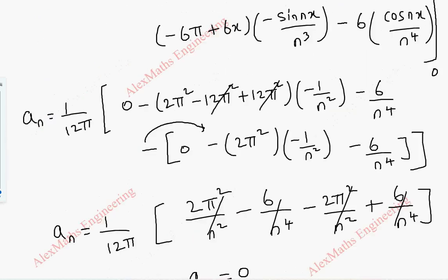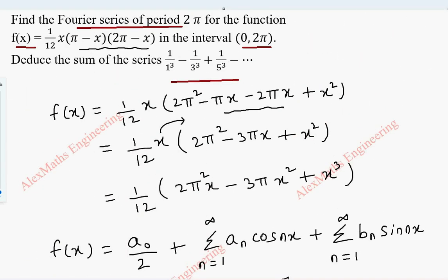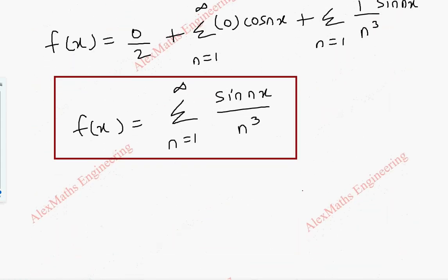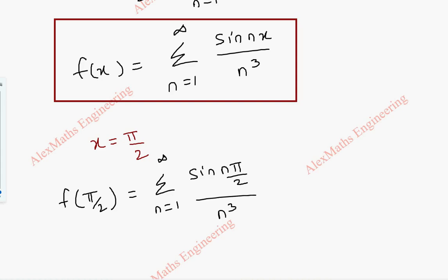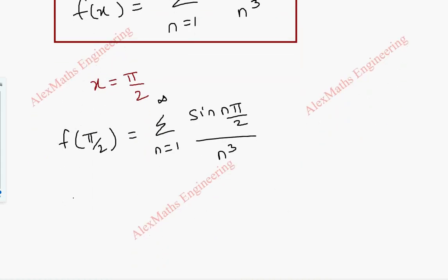Now we have the second part, where we have to find the sum of the series 1/1³ - 1/3³ + 1/5³ - ... For this we are going to take x = π/2. So when we substitute x = π/2, we get f(π/2) = Σ (n=1 to ∞) sin(nπ/2) / n³.